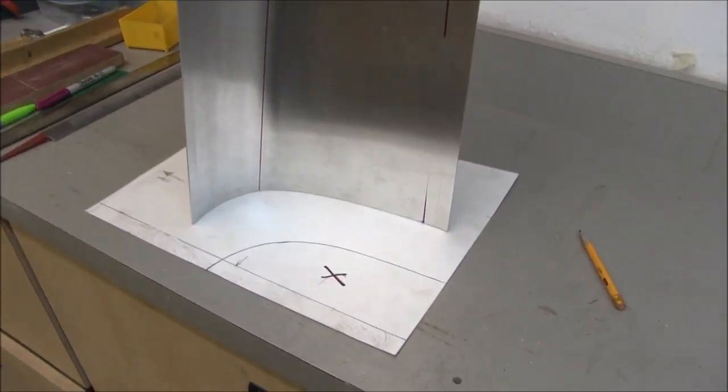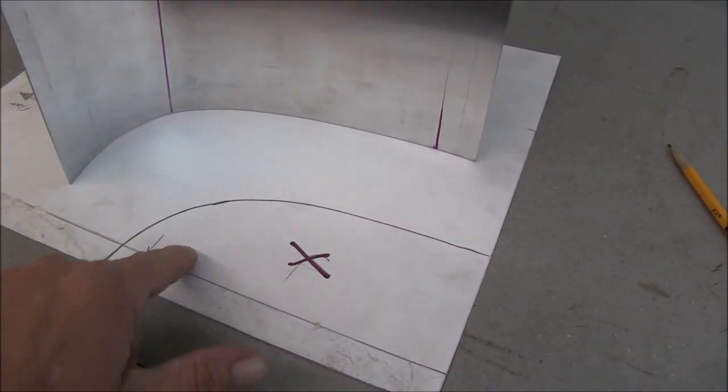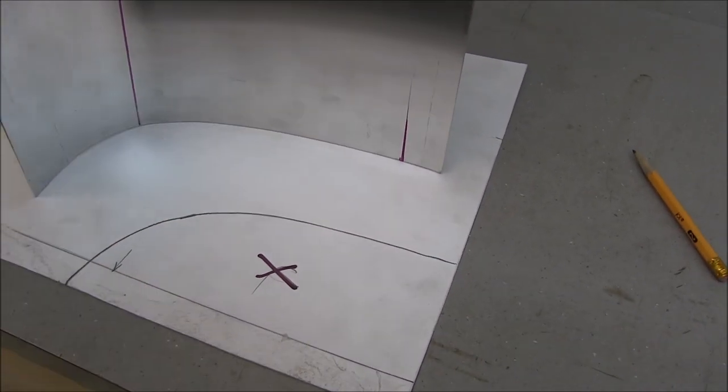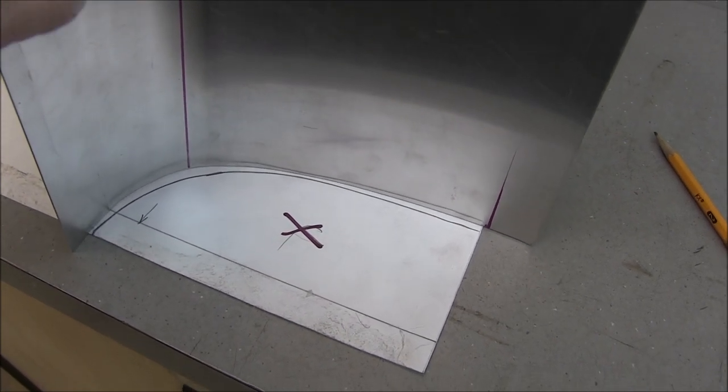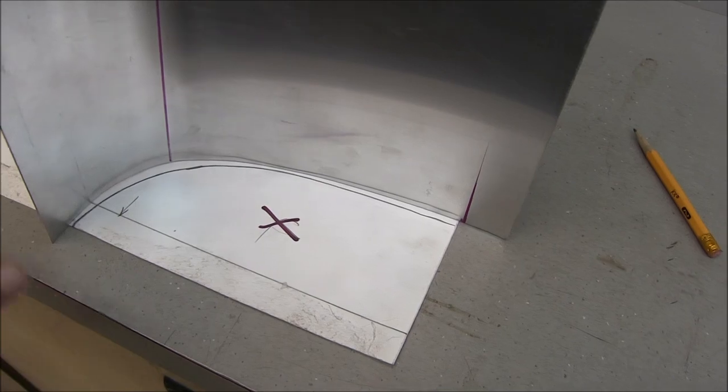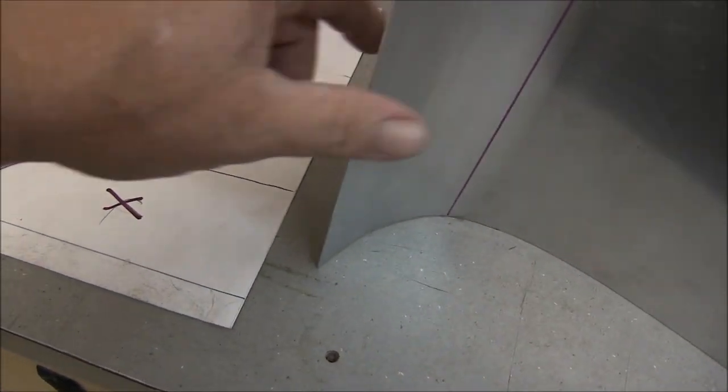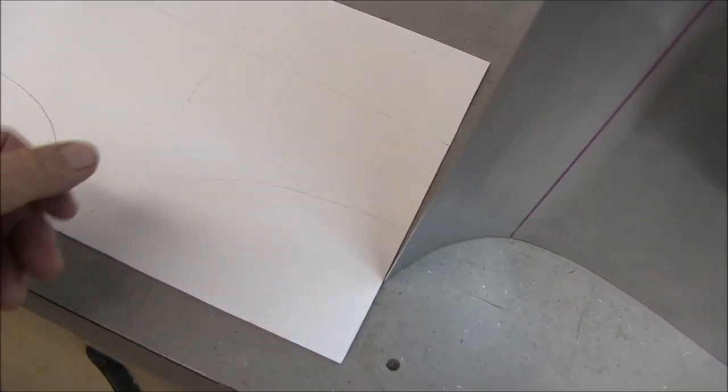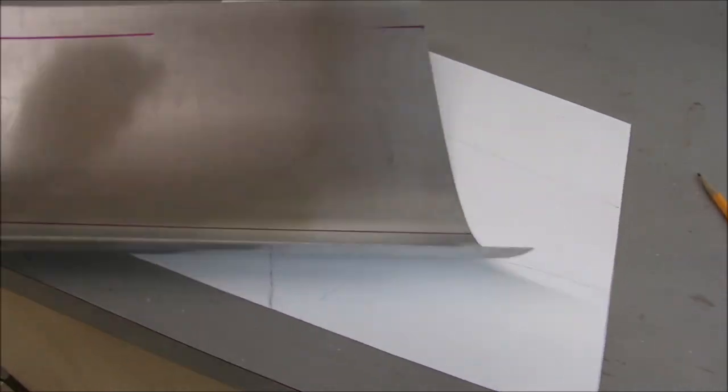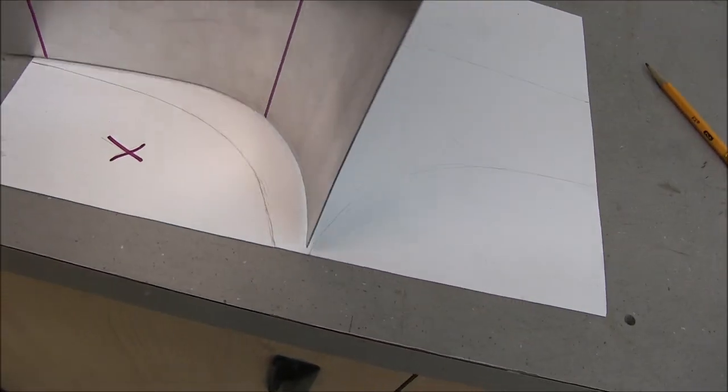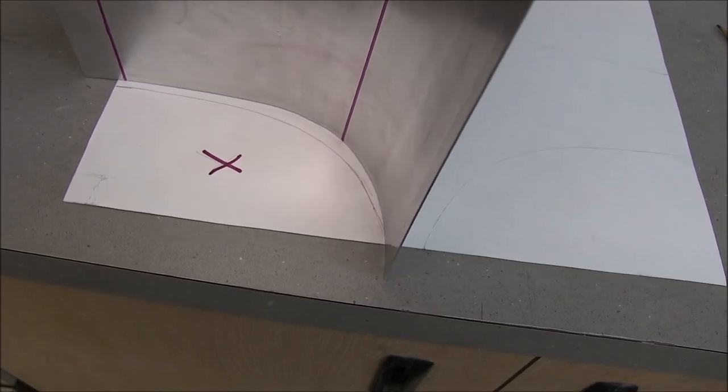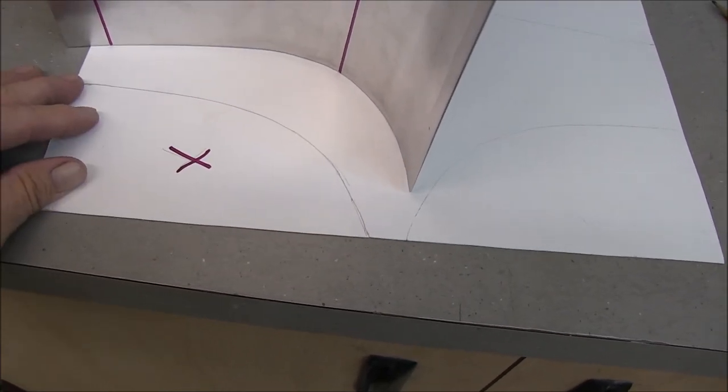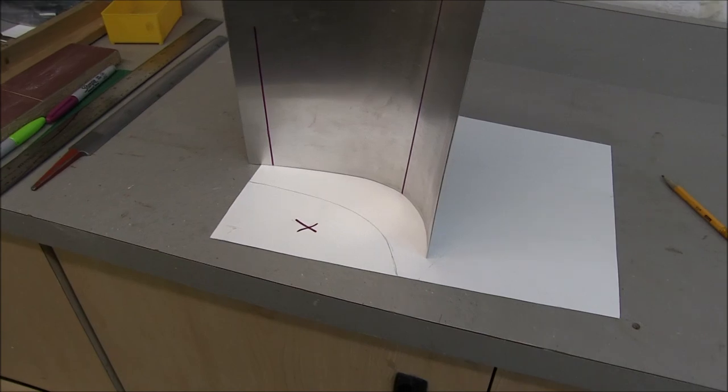Then I just dry fit it a number of times until I'm happy with it. I traced the shape of the buck onto here and then I just have to get it to match. So you see I'm getting there, a little bit more work. And then on the other side here I have the front part and I'm getting close. But anyway, it won't be long before I have that taken care of.